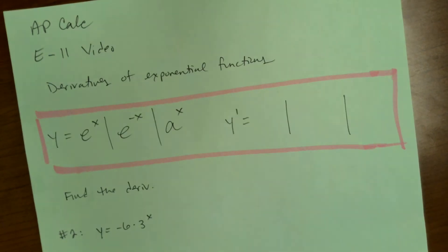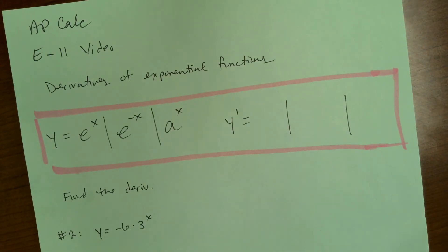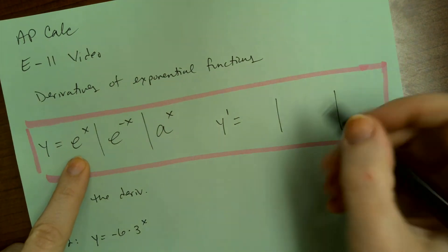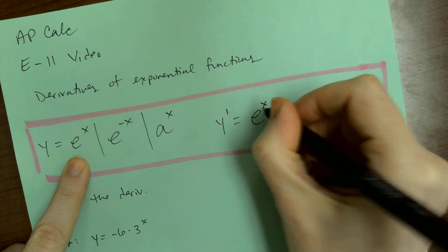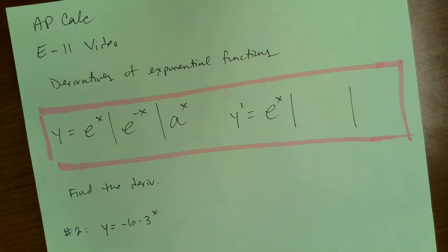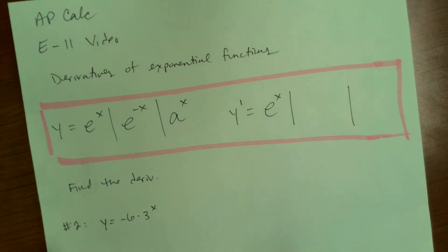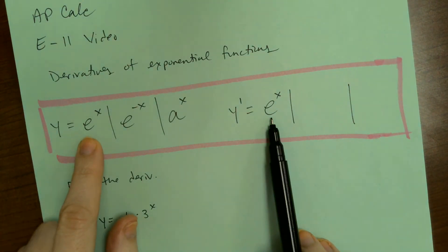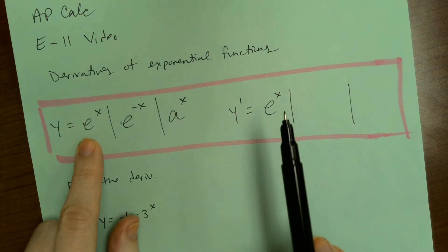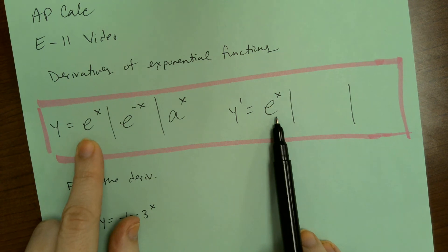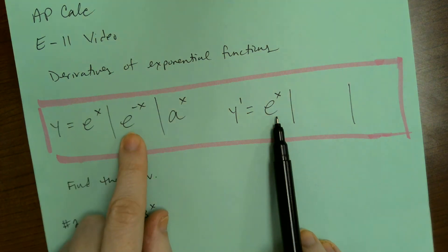So if at every single point y is equal to y prime, we've got that the derivative of e to the x is itself — it's e to the x. The y coordinate and the derivative are always equal. So if y is e to the x, its derivative is the same, e to the x. That will only happen for e to the x.